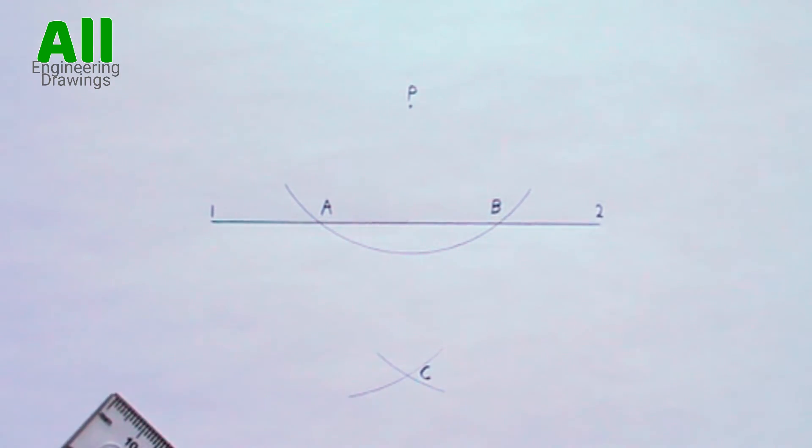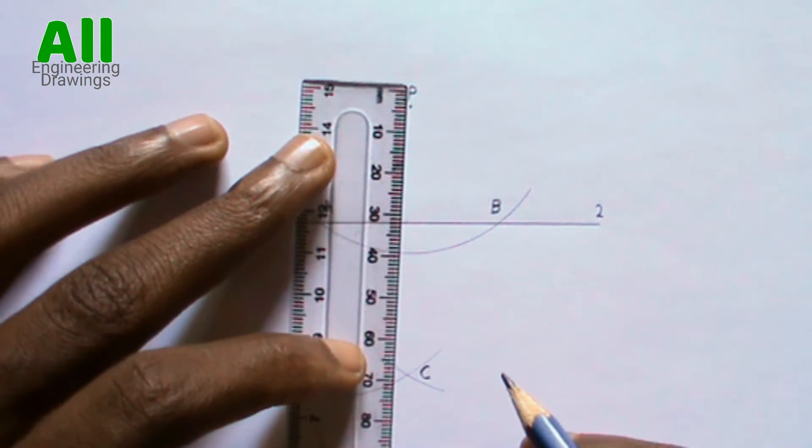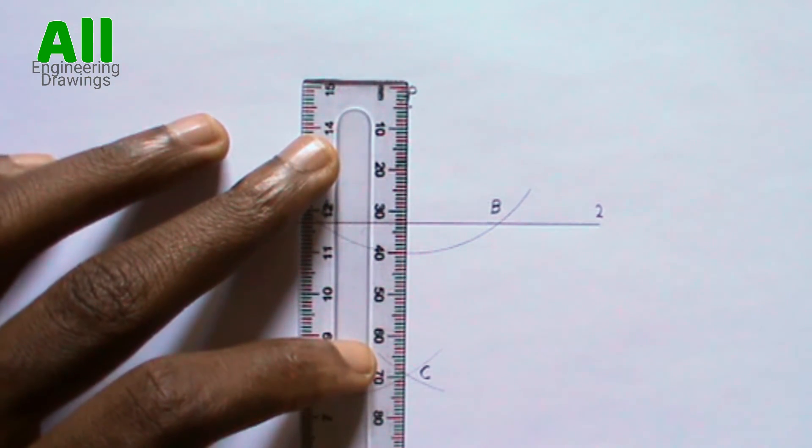Now draw a line from point P passing through point C. Point C, that is the point where the arcs intersect.